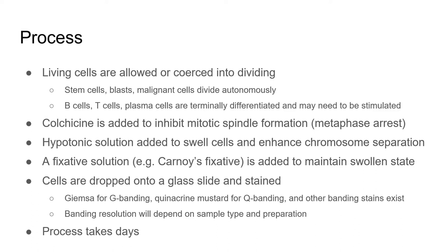You then arrest the cells in metaphase using colchicine to inhibit the mitotic spindles from forming. A hypotonic solution is then added to swell the cells and increase their fragility, and then they are placed in a special fixative to keep them in this engorged state.